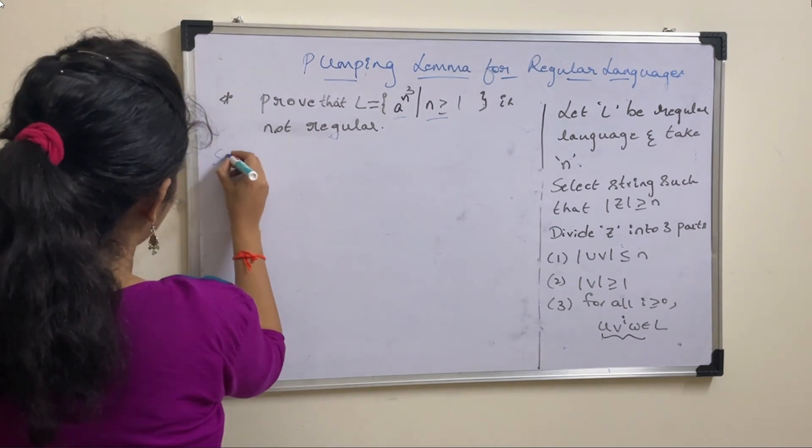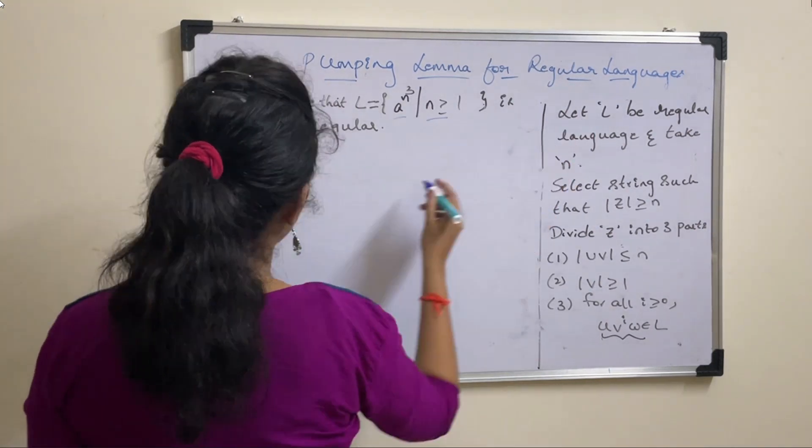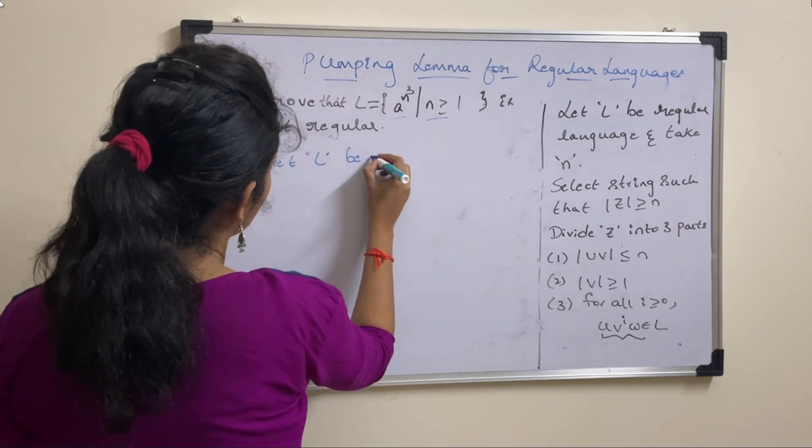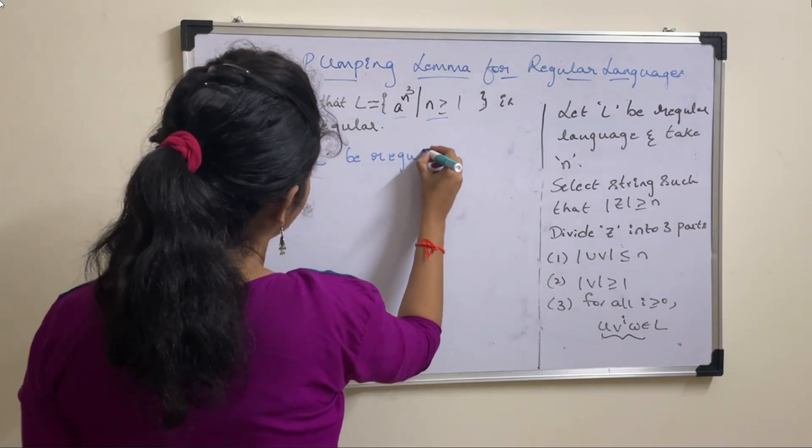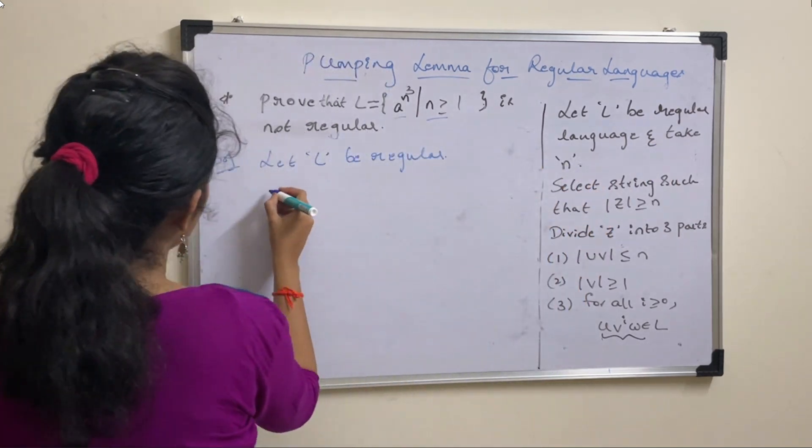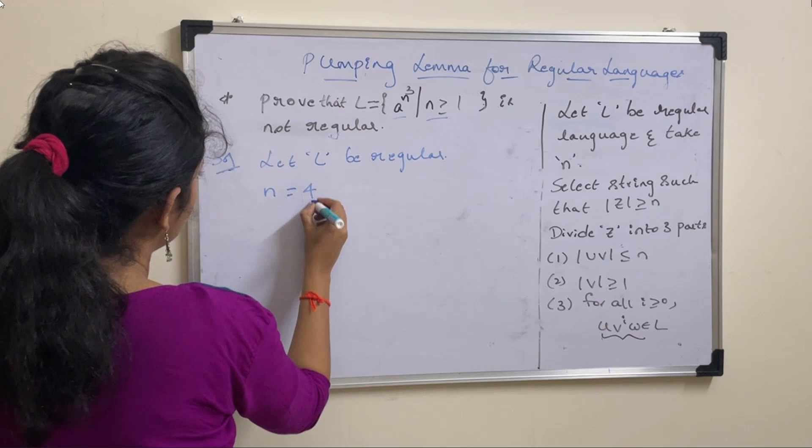So for that, first let us take n value as a regular language. So let L be regular. After this take n value, so let n value equal to 4.